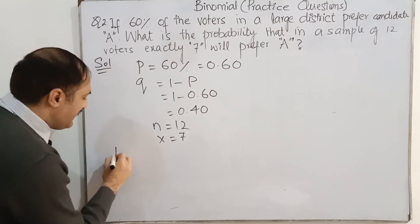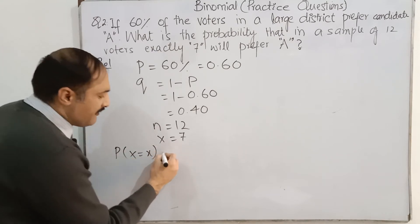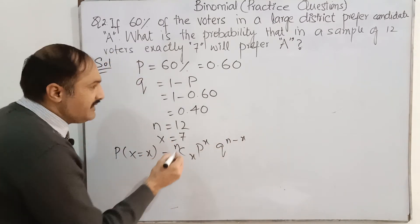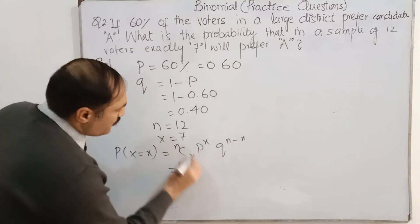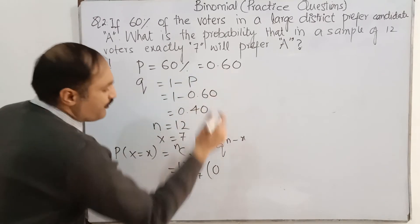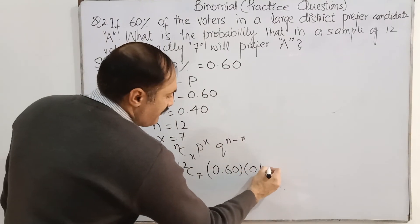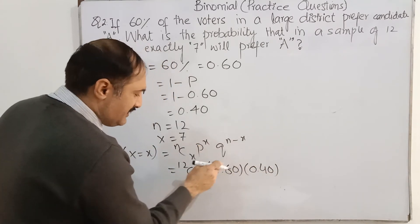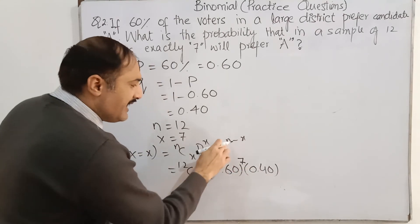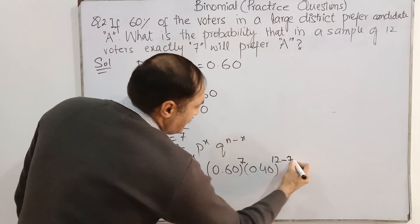Here we will find probability of X is equal to X. We use the binomial. nCx, P^x, Q^(n-x). What is N? N means 12. 12C7. Probability of success is 0.60. Probability of failure is 0.40. For nCx, what is the value of X? 7. So, here is n independent, 12 minus 7.